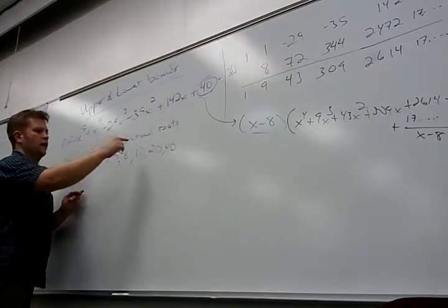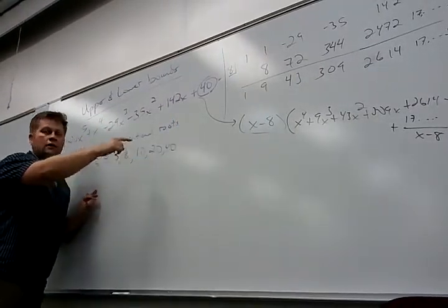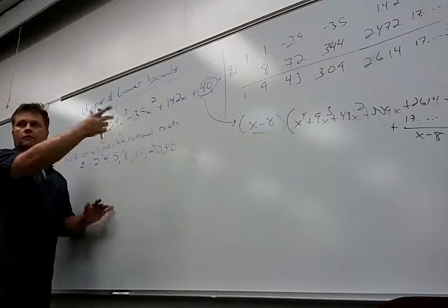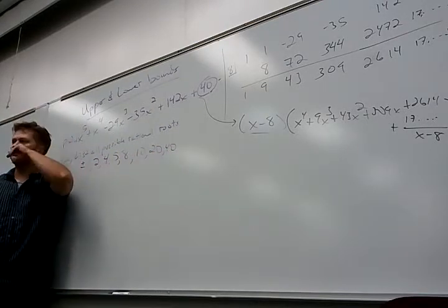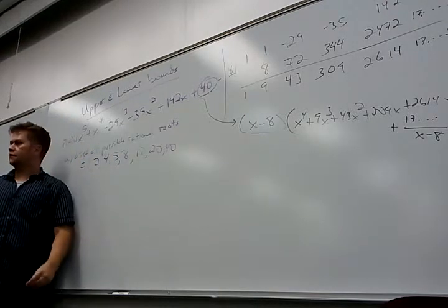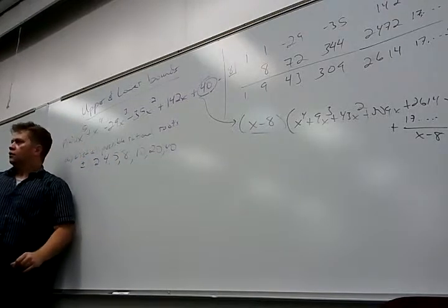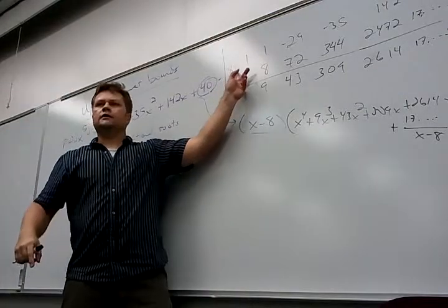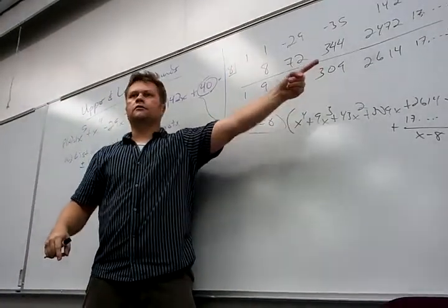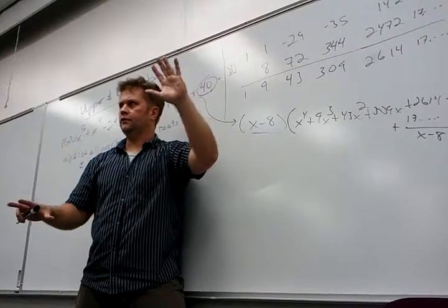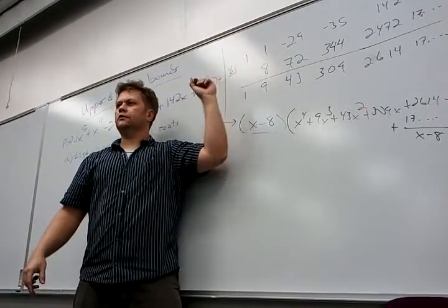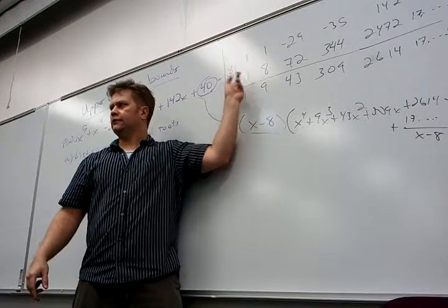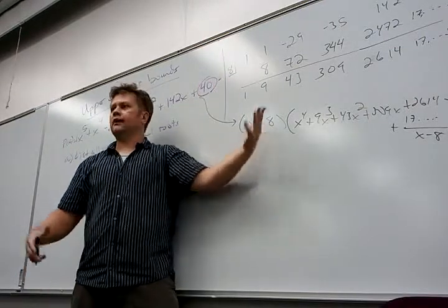And why is that cool? Because now I can eliminate positive 10, positive 20, positive 40, and I've already eliminated positive 8. I just cut my list down by four with only one synthetic division. So if you synthetically divide by something and the answer comes out all positive, that is an upper bound for the zeros. There are no zeros above 8.